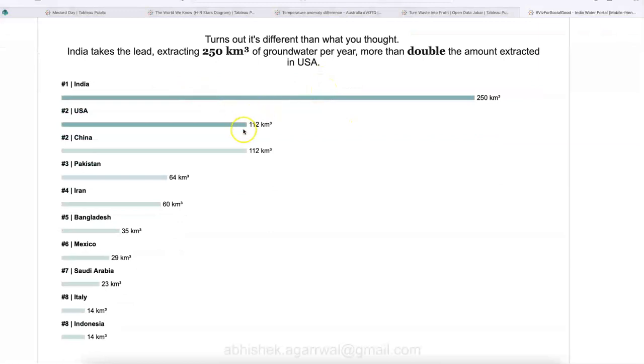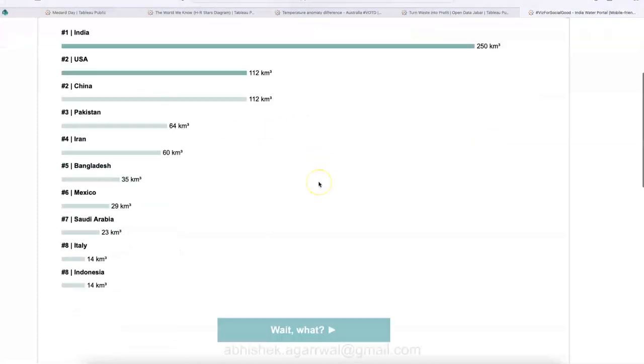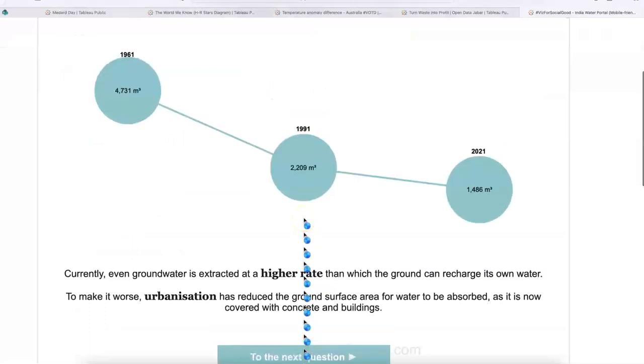India takes a lead extracting 250 kilometer per cube of groundwater per year. More than double the amount extracted in USA. So very interesting observation. Where is India? Where is USA? Where is China? Similar, but India is consuming more from the groundwater, almost double.